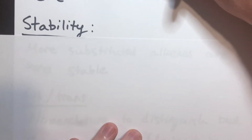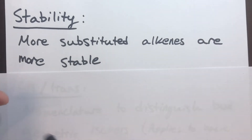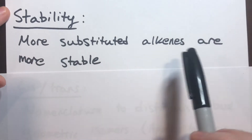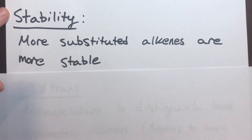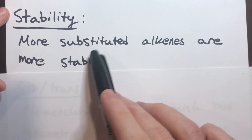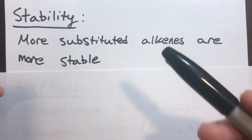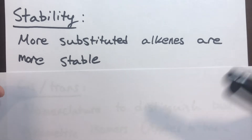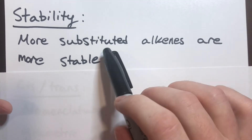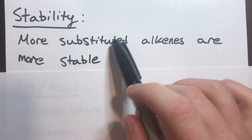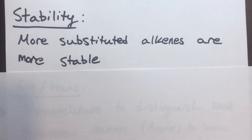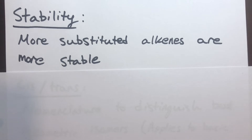Now we'll talk about the relative stability of alkenes. The most stable alkene is the one that is substituted the most. Substitution is simply when a hydrogen is replaced with something else in the alkene. So when you substitute a hydrogen of a normal alkene with something else — like a methyl group or a chlorine — that is considered substituted, making that alkene more stable.